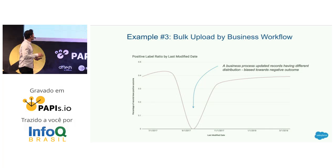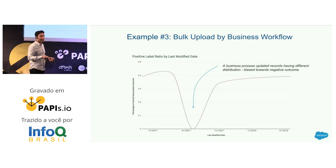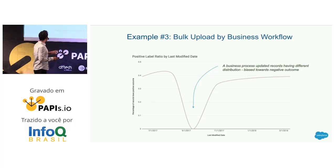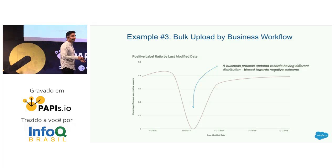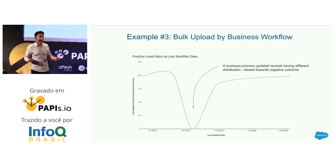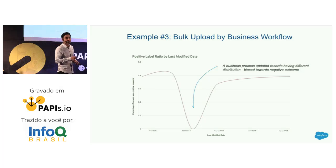Example three: bulk usage by business workflow. On the x-axis we have a time-based feature called last modified date, and on the y-axis the percentage of records with a positive outcome. Generally it's around 40%, which is healthy and stable — except something really weird happened around September 1st, 2017, when a business workflow created a bunch of records almost all of which had negative outcome. If fed into a machine learning algorithm, it would think that last modified date has superhuman predictive powers, which it doesn't — so the model will perform very badly in production.